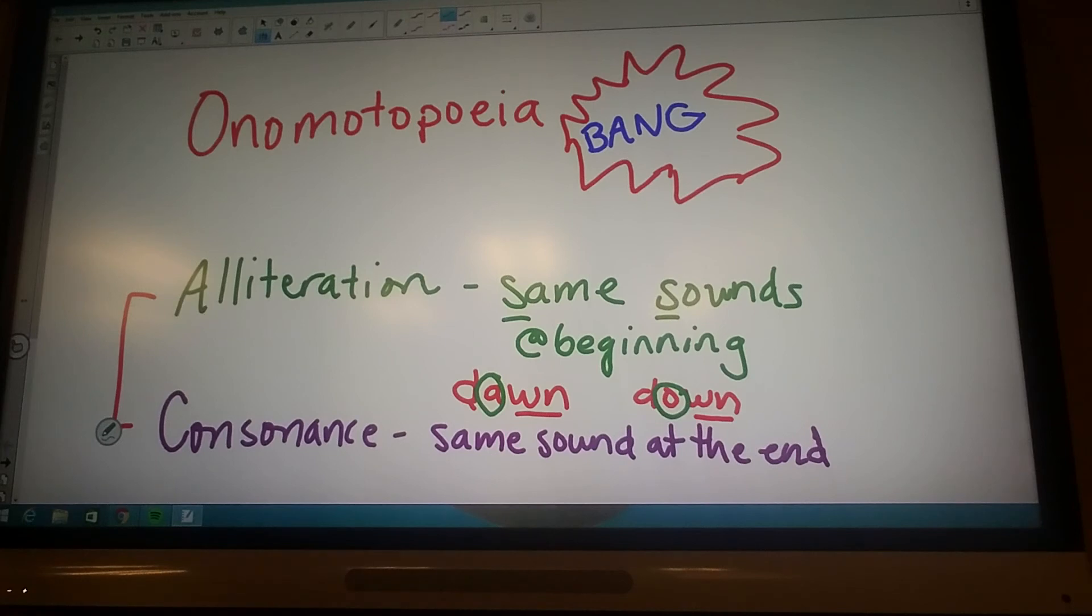The first one is onomatopoeia, which is a crazy word, and it's really hard to spell, so I'll never ask you to do that. But an onomatopoeia is a word that we use as humans to mimic a sound. So for example, bang, right? That's a sound.